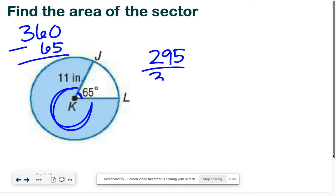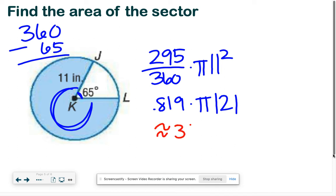That is our degree times pi. What's our radius? 11 squared. Again, calculator work: 295 divided by 360 is about 0.819 times pi, 11 squared is 121. You should get approximately 311.5 inches squared.